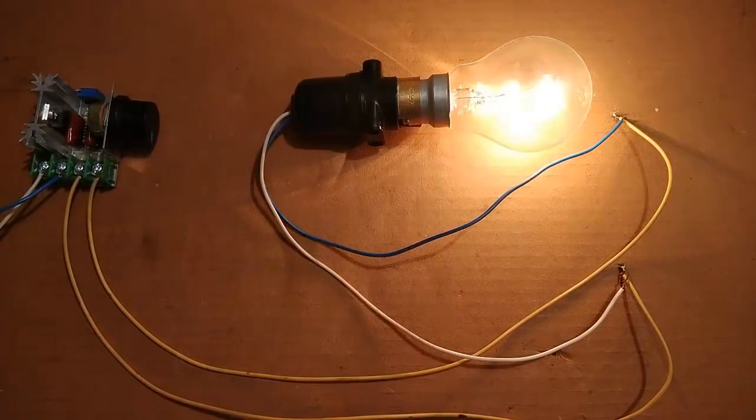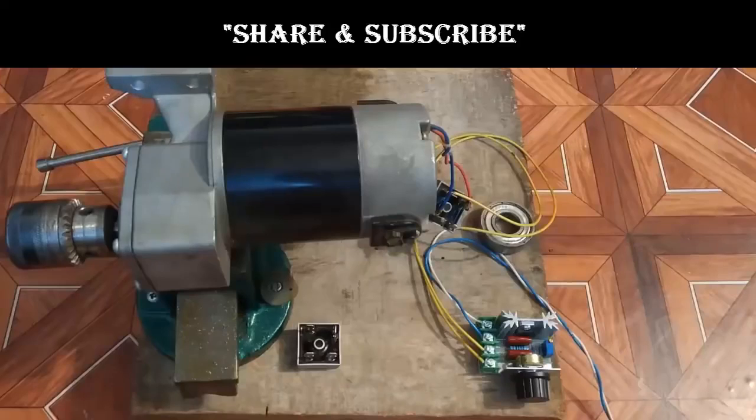Now I am going to perform the motor speed control test with this voltage regulator circuit. This is a 100 watt permanent magnet DC motor, and since the output of this circuit is AC, I have connected a bridge rectifier to convert that AC to DC.